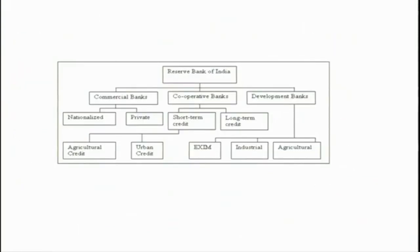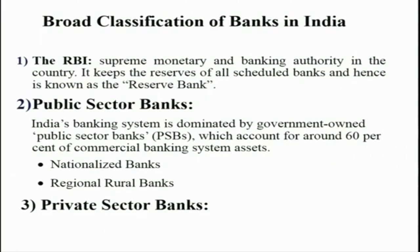This is a screenshot summary of the structure of Indian banks — the RBI is the apex bank, then commercial banks, cooperative banks, and development banks. These include nationalized banks, private banks, etc. To summarize: RBI at the top, then public sector banks and private sector banks. The Indian banking system is dominated by government-owned public sector banks, which account for around 60 percent of commercial banking system assets.